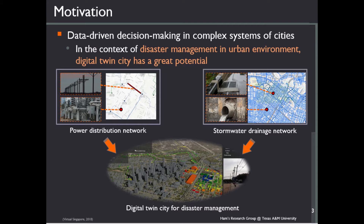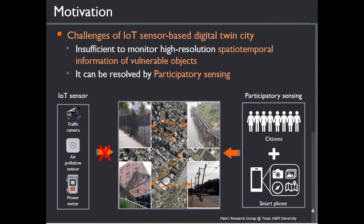In the context of disaster management in urban environments, Digital Twin Cities has great potential to monitor the power distribution network and transportation system. Despite the benefits of IoT sensor-based Digital Twin Cities, pre-installed sensors cannot be sufficient to monitor the extent to which urban environments are vulnerable to potential natural disasters.